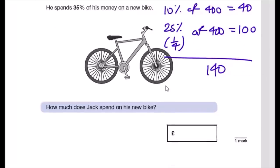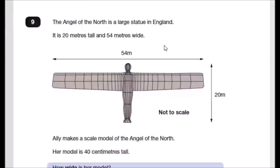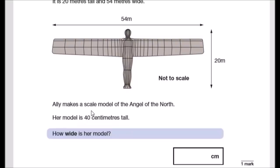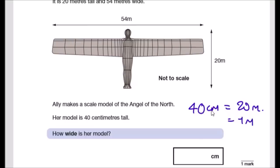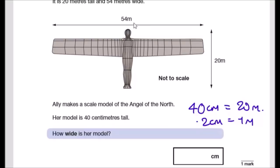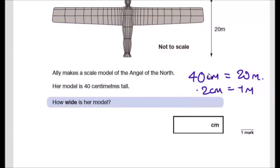Question 9: the Angel of the North is 20 metres tall and 54 metres wide. Ali makes a scale model that is 40 centimetres tall. So for every 1 metre in real life, the model is 2 centimetres. To find the width of the model: 2 × 54 = 108 centimetres.